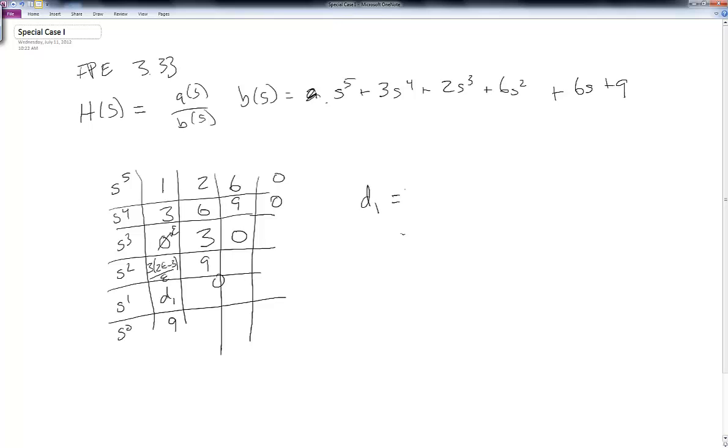And in this case, D1 ends up being, let's see, I have 9 minus 9 epsilon squared over 2 epsilon minus 3.